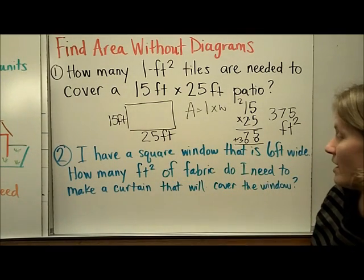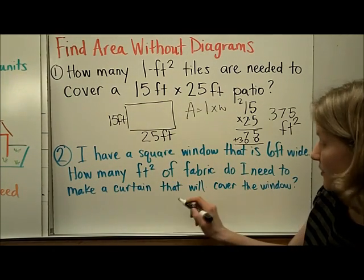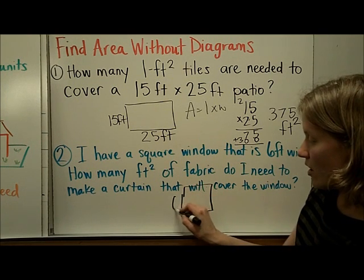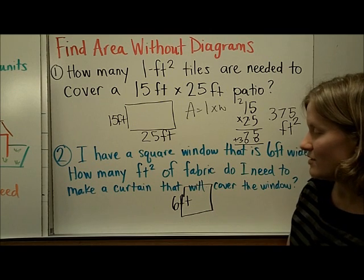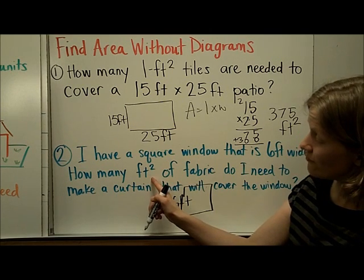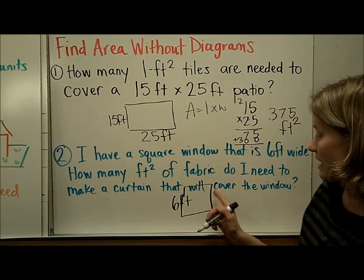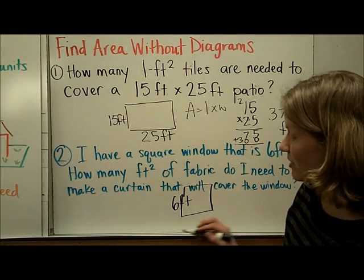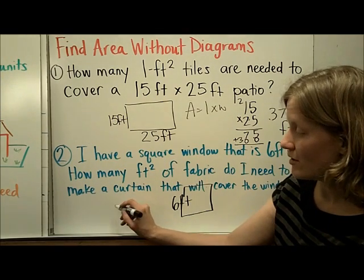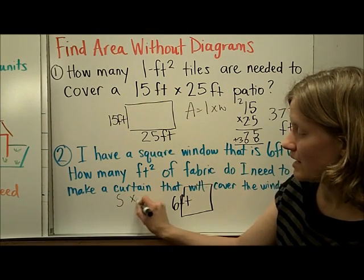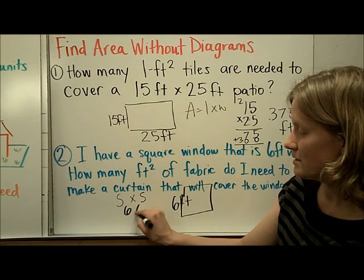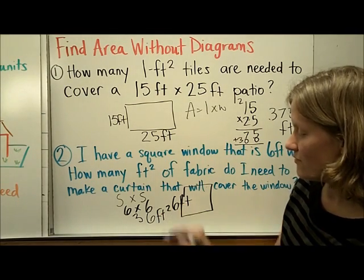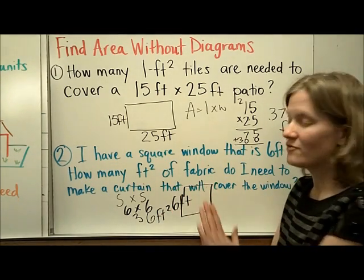Next I have a square window that is 6 feet wide. So if I know that it's 6 feet wide and it's a square, all sides of that window are going to be 6 feet. How many square feet of fabric do I need to make a curtain that will cover the window? Well this word cover here should be your clue that it's an area problem, and the formula for the area of a square is side times side. So I'm going to multiply 6 times 6, and know that I would take 36 square feet of fabric in order to cover this window.